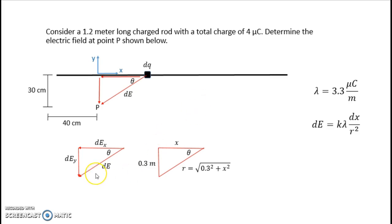I have an electric field triangle here that relates dE to its x component and its y component. And then I have the analogous triangle in terms of lengths. The length of this top side of the triangle is my coordinate x. The length of this vertical side of the triangle is how far P is below the rod. And the length of the hypotenuse is r, my distance from dq to point p, which we can write using the Pythagorean theorem.